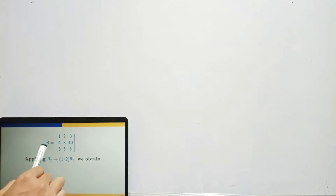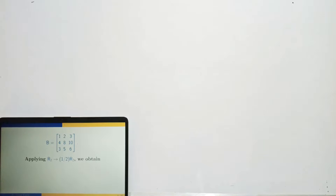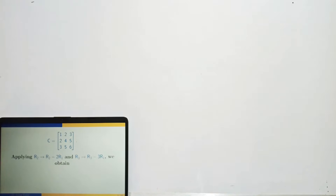Suppose B is this matrix. Applying the operation R2 replaced by (1/2)R2 means we are multiplying the second row by 1/2. The output: the second row is now 2, 4, 5 — multiplied by 1/2 — while the other two rows are unchanged.